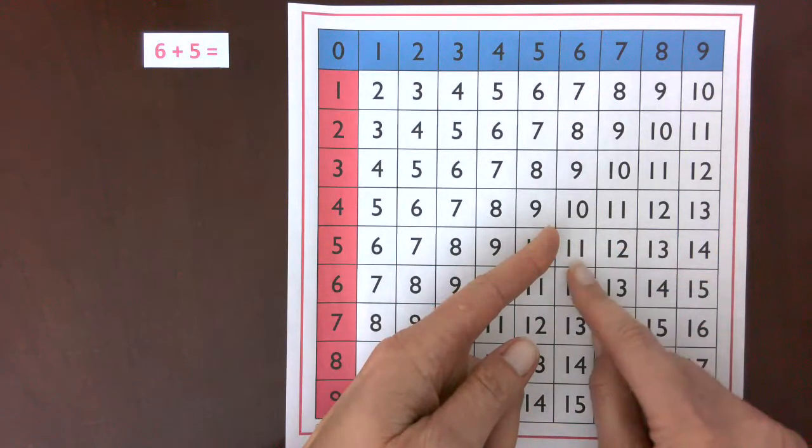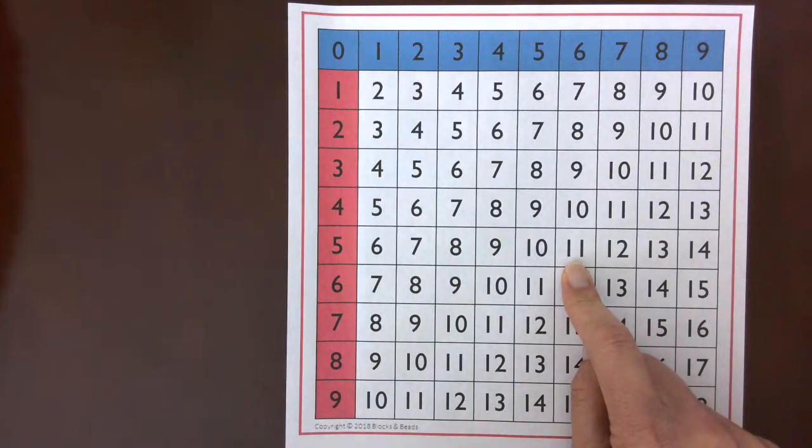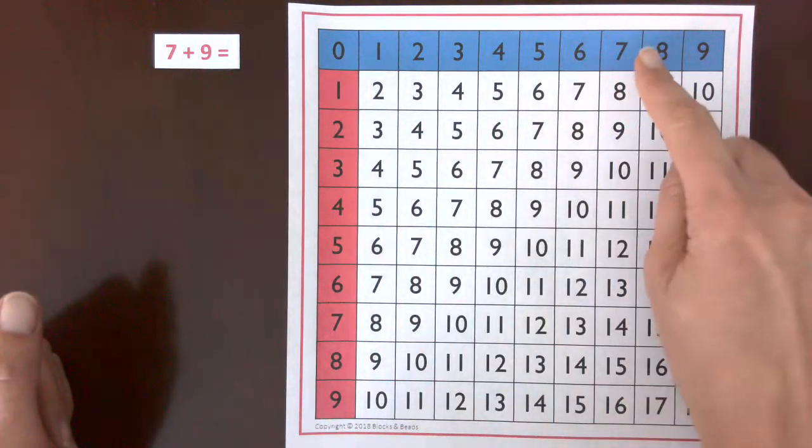So 6 plus 5 equals 11. Let's try another one: seven plus nine. Remember, the first step we're going to find the seven.